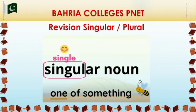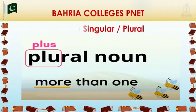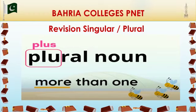Let's move towards the second word, that is plural. Nouns that are more than one in number are called plural nouns. Just focus on the spelling and sound of plural. The first sound of plural is 'plu' — you can suppose it as plus, that means more than one. A plural noun refers to more than one person, place, animal or thing.